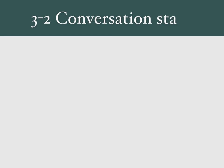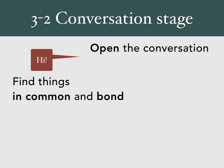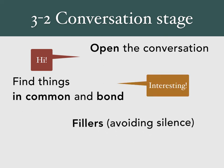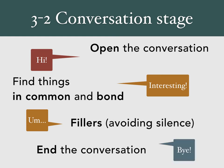Secondly, our small talk will vary according to the stage of conversation. At the beginning, we need to open up our talk in a good way. Then we need to continue it and find something in common so we can bond. We also need to try and avoid awkward silences by using filling language, such as 'hmm', 'uh', 'okay', and so on. And then we need to end the small talk nicely, perhaps as a way to move on to big talk.